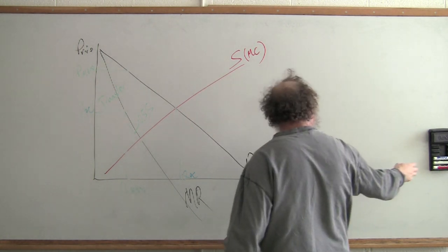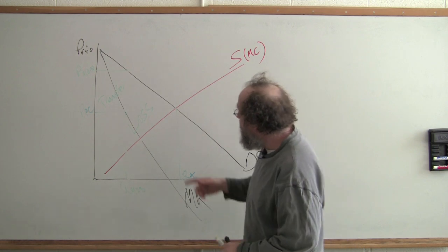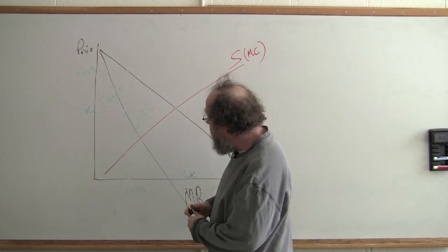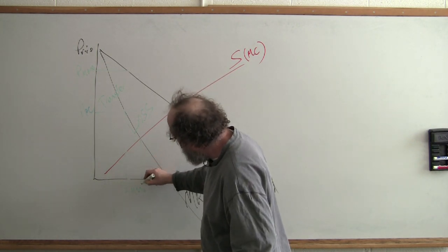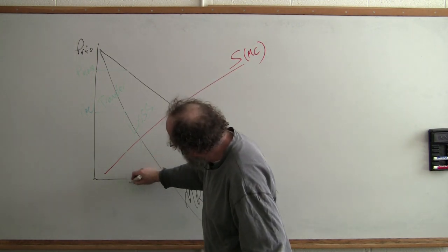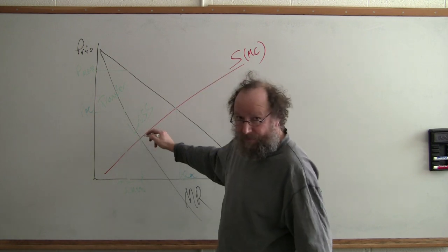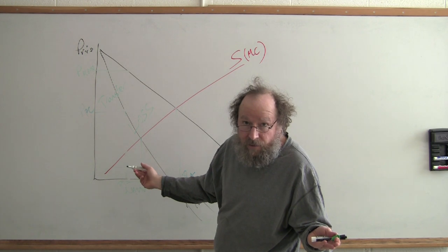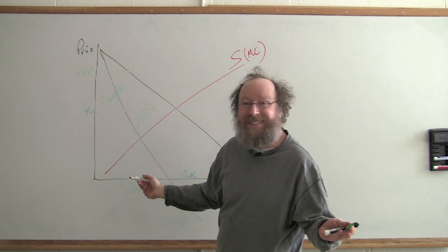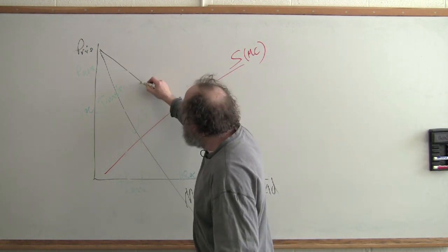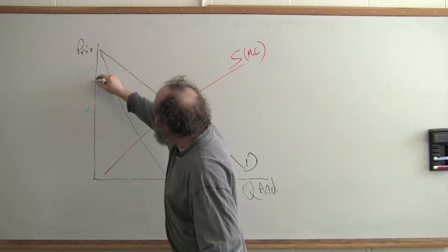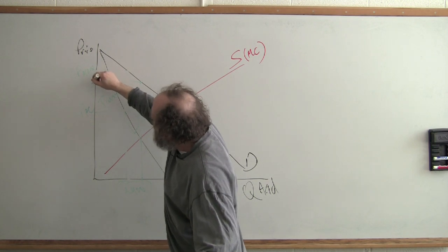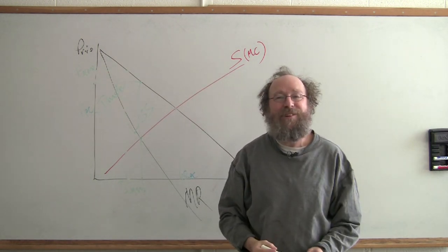That's less production than had been the case with the perfect competitor. You're not producing all the way out here. You're just stopping over here at Q Monopoly. You stop over there. This quantity, prices are higher, because there's lower quantity. So you can charge higher prices to fewer deadheads. So you have a price over here. Forget this one. You produce and sell at that price, higher prices.